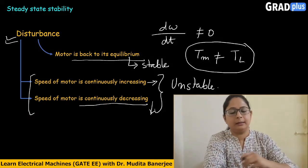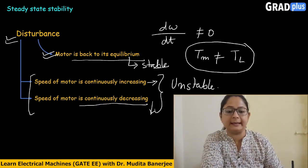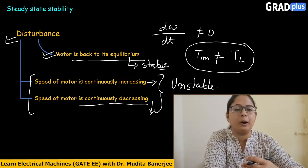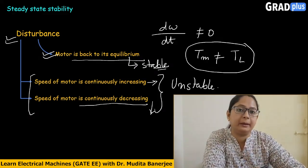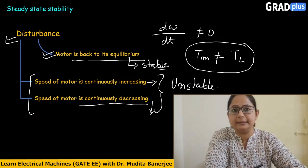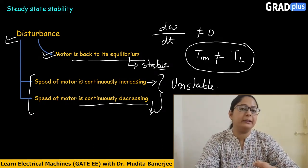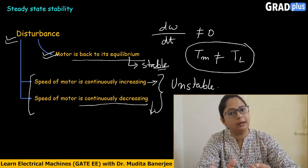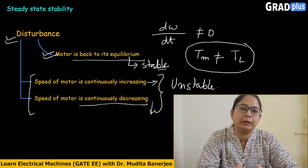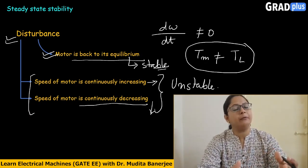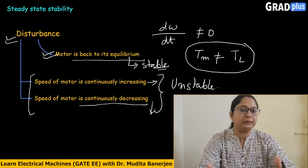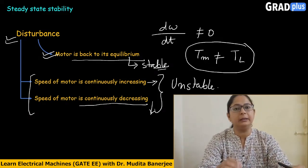The motor should operate in the stable region only. If any disturbance occurs, the operating point should come back to its equilibrium point — that is stable condition; otherwise it is unstable. This is decided based on the speed-torque characteristics of both the motor and the load. It is very important to know these characteristics to determine which type of load is suitable for which type of motor.